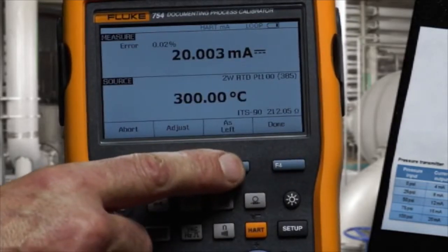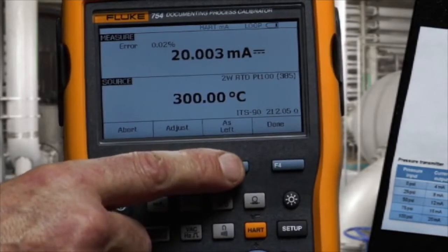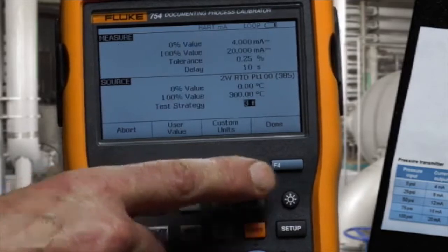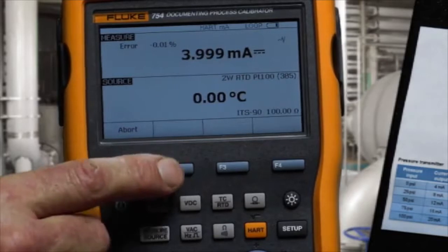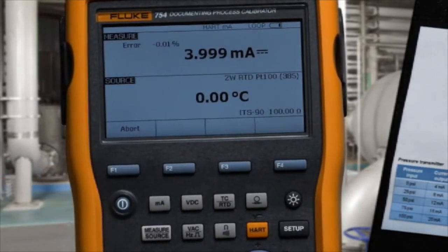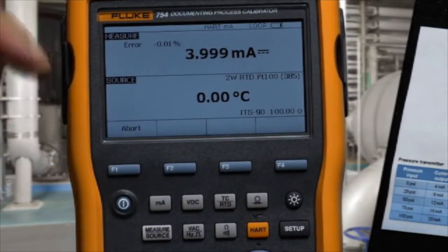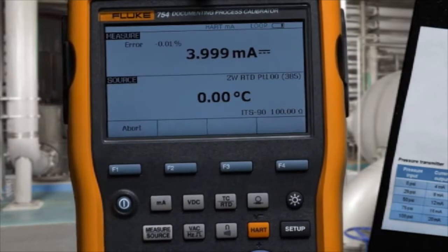Next, we need to document the post adjustment condition of the transmitter as left. We'll automatically record and document those results. Applying the 0% value, measuring the milliamp current, and calculating error percent of span.